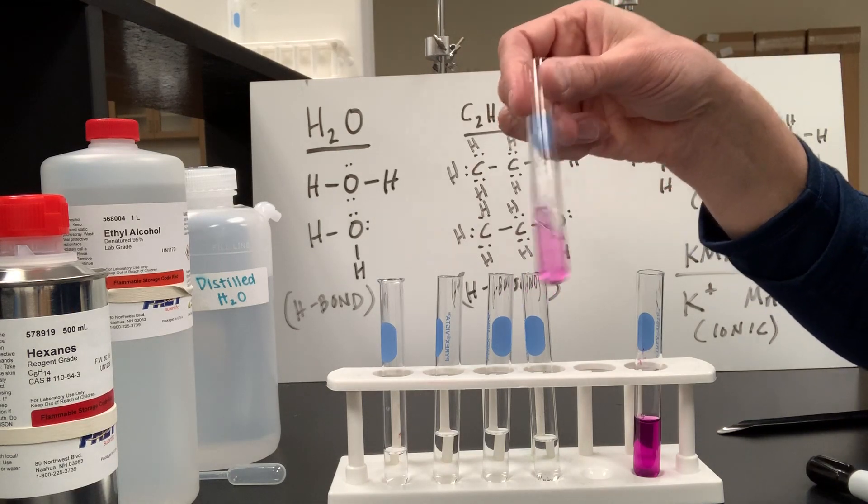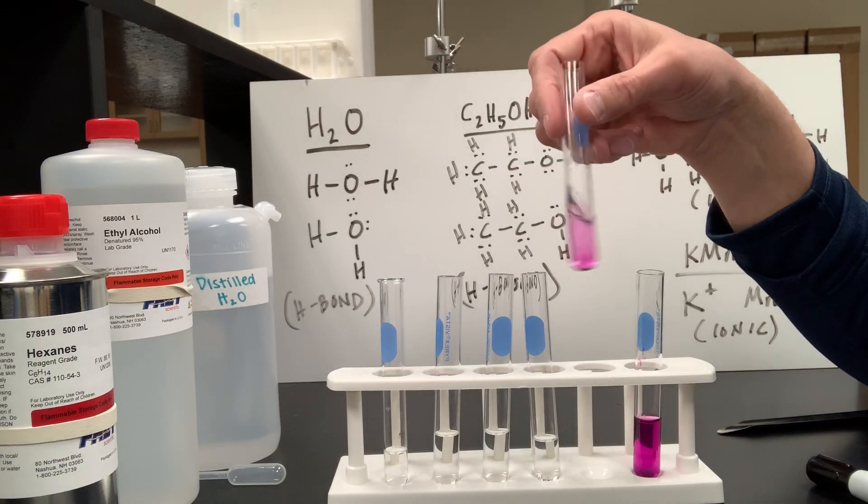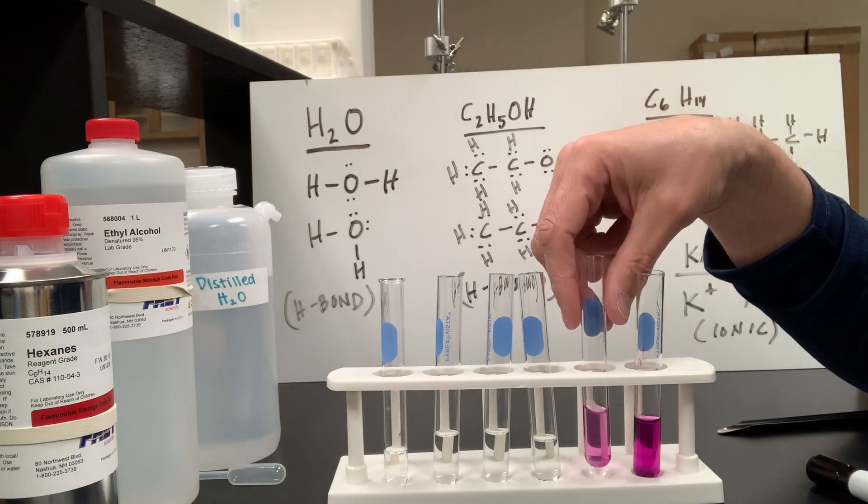So the potassium permanganate, which of course has a positive and negative end, does not dissolve quite as well in ethanol as it does in water.